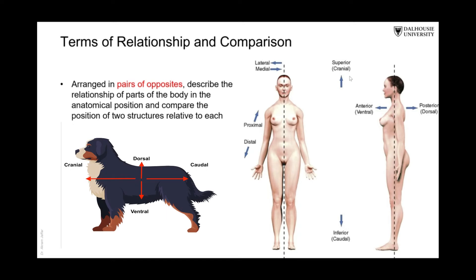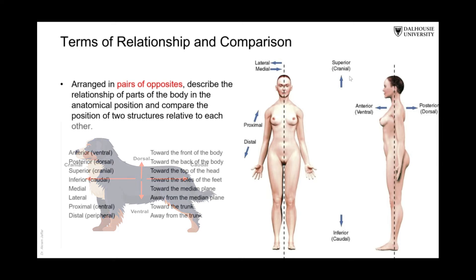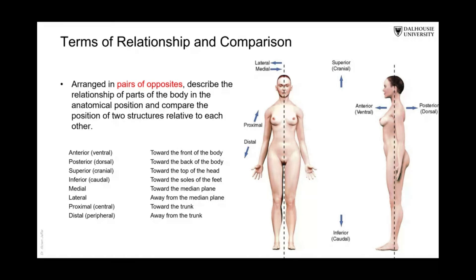These words are derived from descriptions of animals and are mostly used in neuroanatomy, but can be used in gross anatomy as well. We have the words medial and lateral: medial is closer to the midline of the body, and lateral is away from the midline of the body.